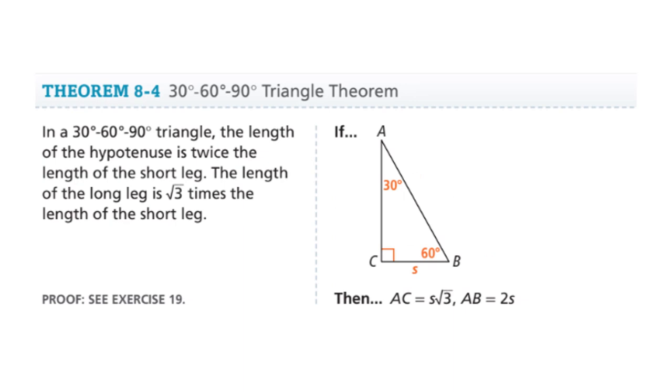For 30, 60, 90, the smallest sides will be s. The other side will be s radical 3, and the hypotenuse is 2s. So, always relate the shorter side with the hypotenuse. If that is s, then the hypotenuse will be 2s, and the third side will be s radical 3.